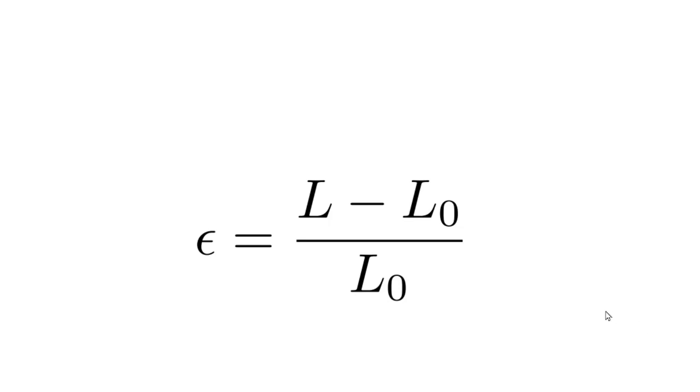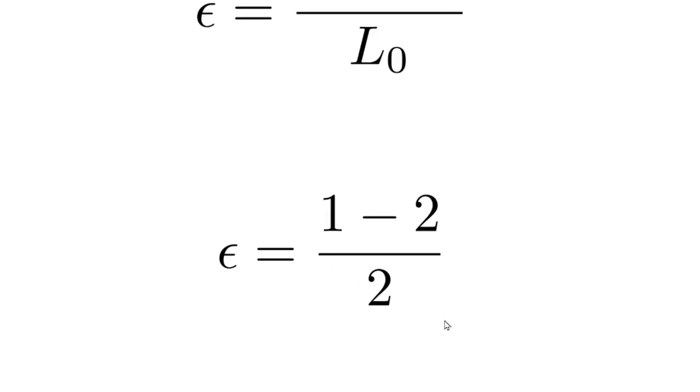If you're ever unsure about some canceling operation, sometimes it helps to think about it in terms of just numbers. Suppose instead of L we had 1, and instead of L0 we had 2. Now looking at this equation right here, very few people would make the mistake of thinking that the 2's cancel.